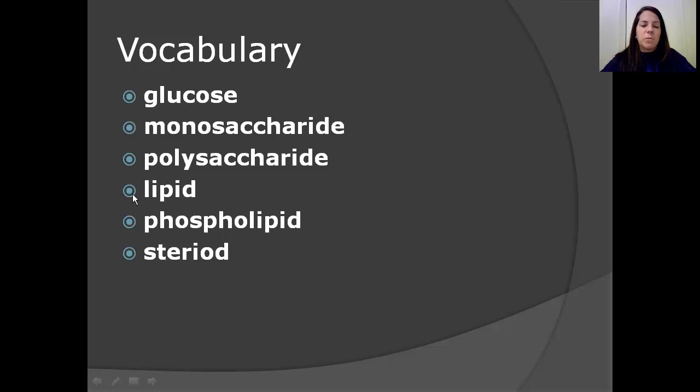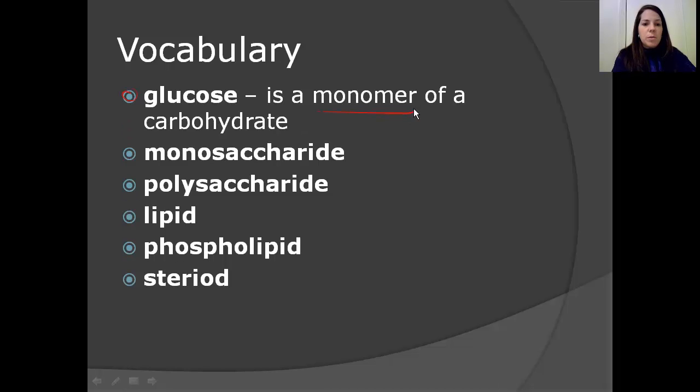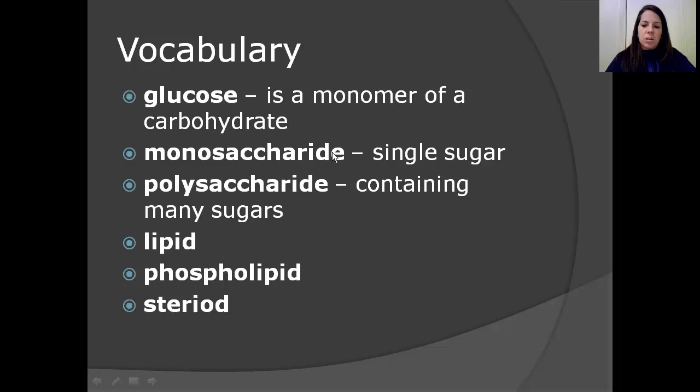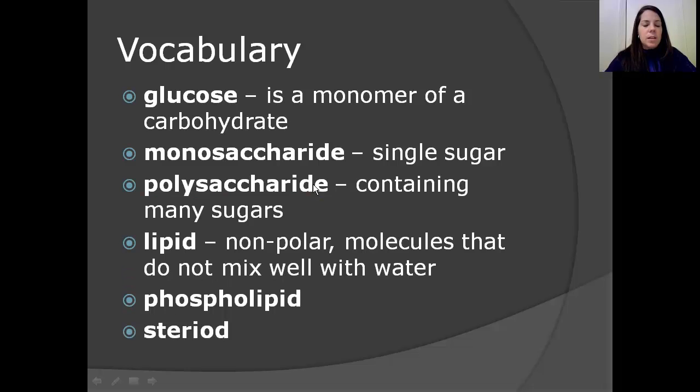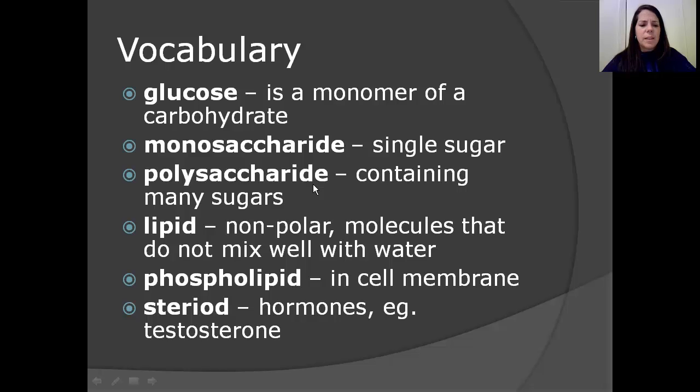A little bit of vocabulary to go over before we get started, just so you can follow along in the video. Glucose is a monomer of a carbohydrate, a building block. A monosaccharide is a single sugar, so mono means one, saccharide means sugar. Next, we have a polysaccharide, poly meaning many, many sugars. A lipid is nonpolar molecules that do not mix well with water. Remember that characteristic about lipids. Phospholipids are found in the cell membrane of all cells. And finally, steroids, which are hormones. An example of a steroid would be testosterone.